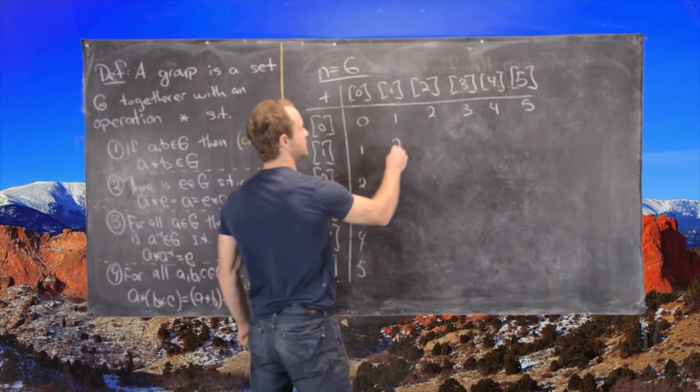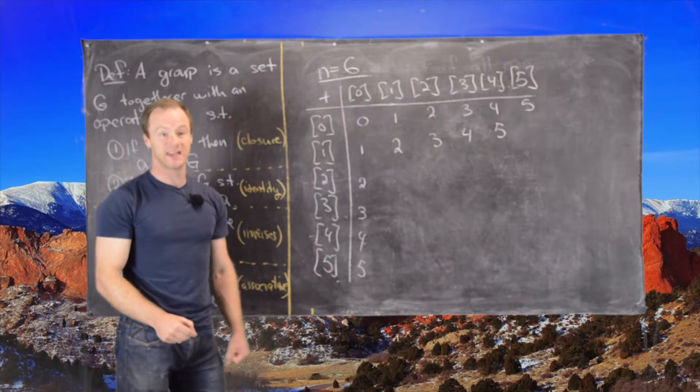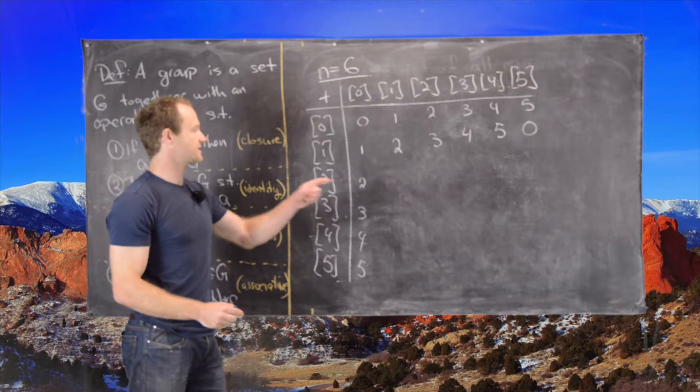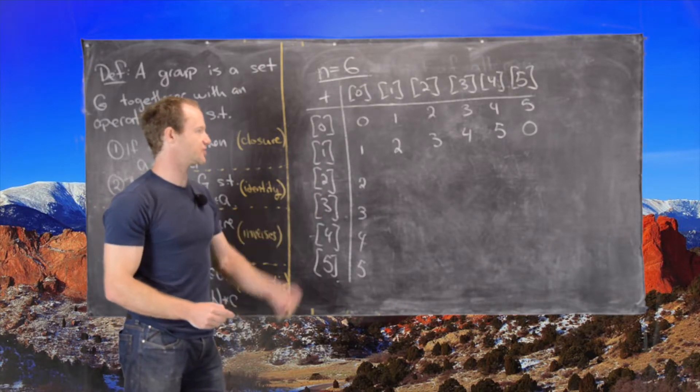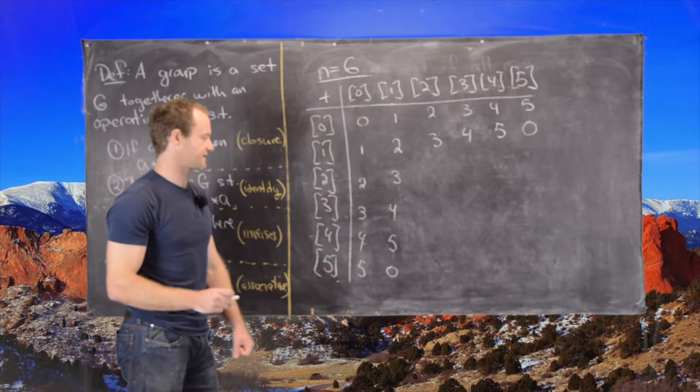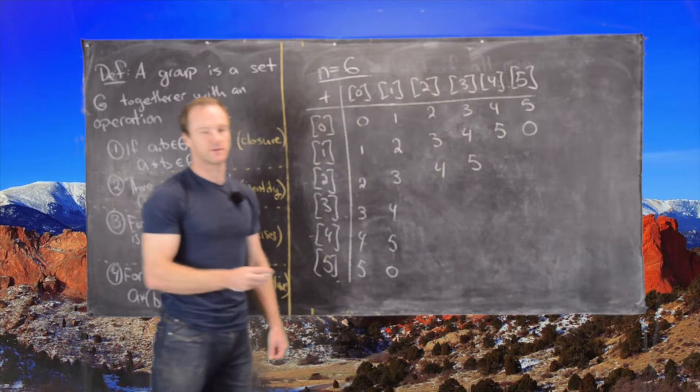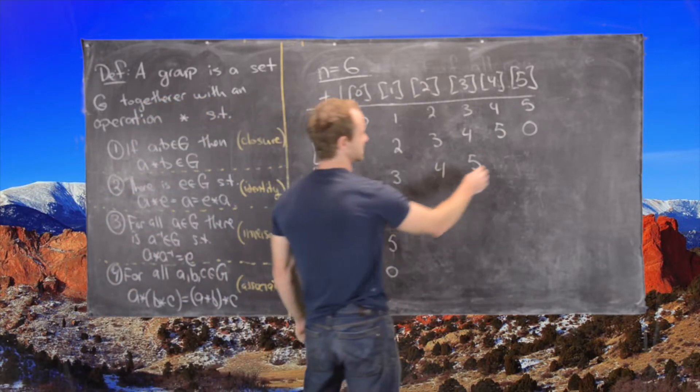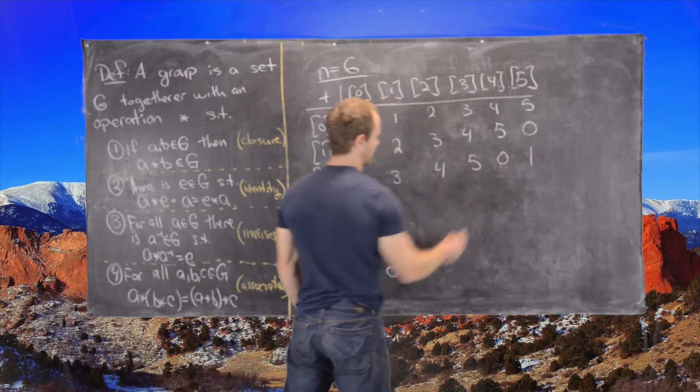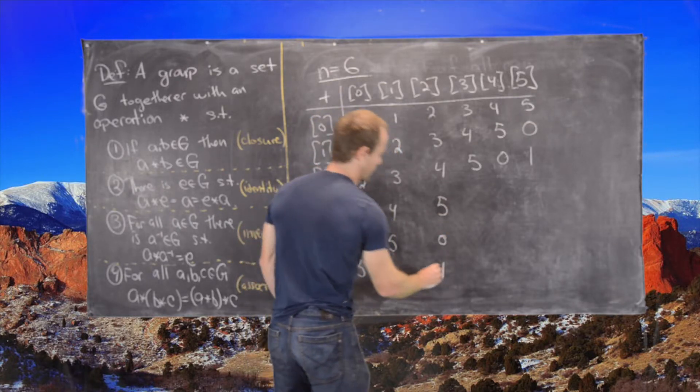And now 1 plus 1 will be 2, 1 plus 2 is 3, 4, 5. And now 1 plus 5 is 6, but the equivalence class of 6 is the same thing as the equivalence class of 0. Now since this is symmetric because the addition is commutative, we can fill in this very easily. So 3, 4, 5, and then 0 again because 1 plus 5 is 0. And now let's look at 2. 2 plus 2 is 4, 2 plus 3 is 5, 2 plus 4 is 6 which is 0 because of the equivalence class. 2 plus 5 is 7 which is 1 because we're looking at equivalence classes. And now we have 5, 0, 1. Great.